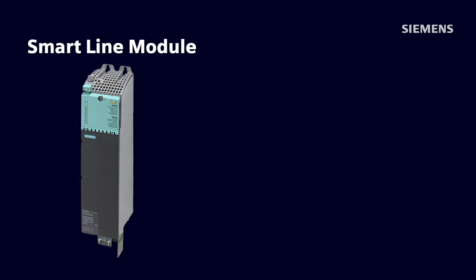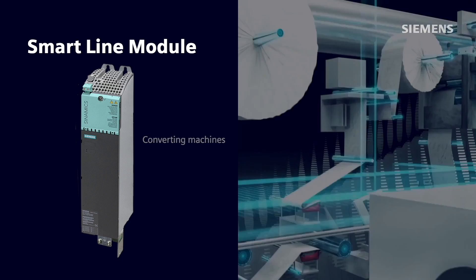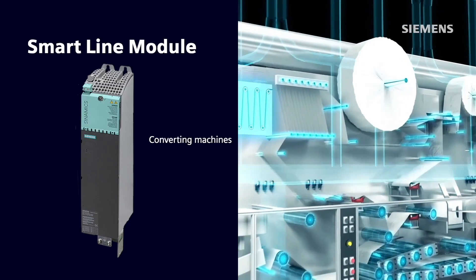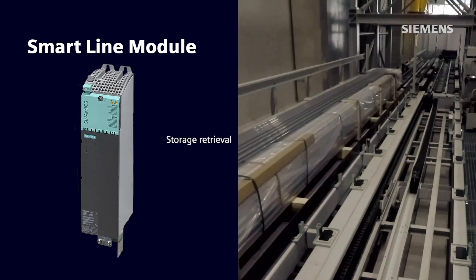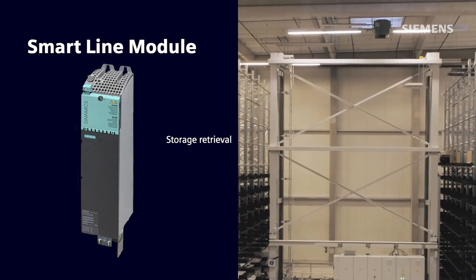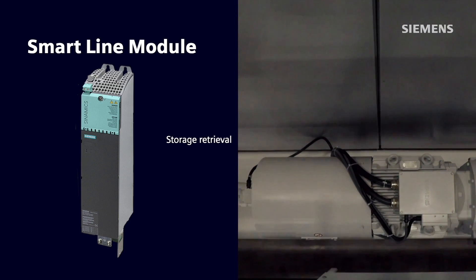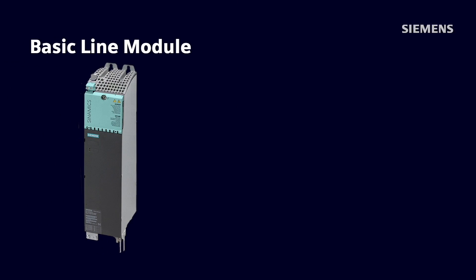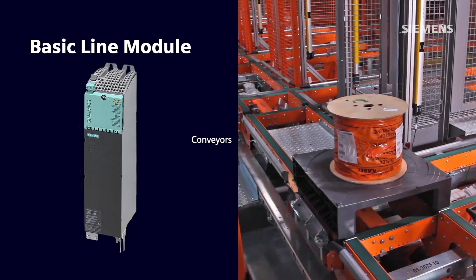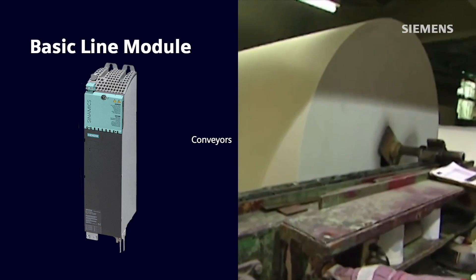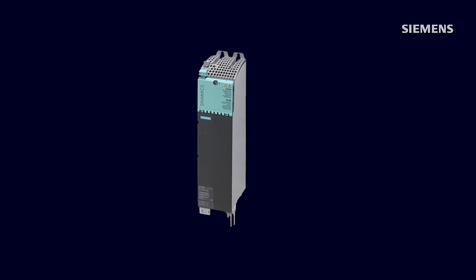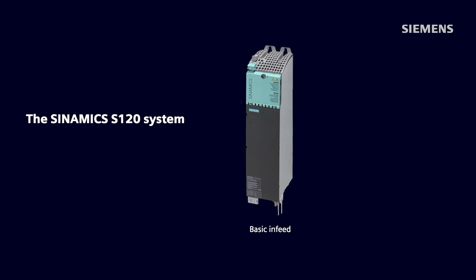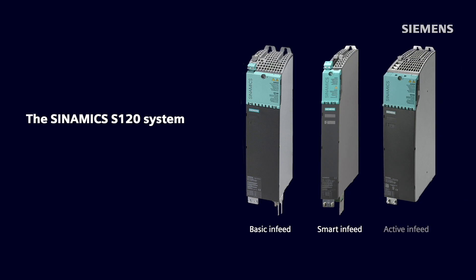The smart line module is also used for many regenerative applications, and this selection would typically be used on converting machines, paper machines, and storage and retrieval equipment, or motion control applications where the active line module's advantages are not required or are cost prohibitive. For the basic line module, more general applications, such as conveyors or machines with predominant motoring load cycles, such as roofing material machines, is where they are best suited. Having this flexibility of the three different types of infeed modules really allows the Synamics S120 drive system to be the most flexible and cost optimized system for the widest range of drives applications.